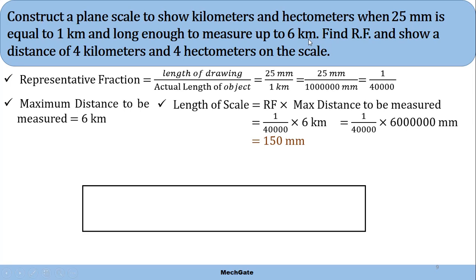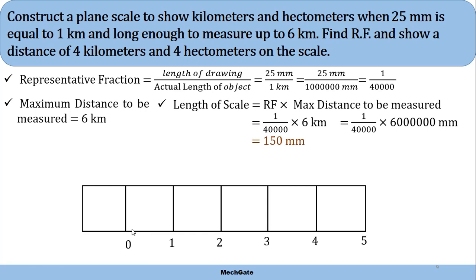We have to divide our 150 millimeter length into 6 equal parts. At the end of the first division, let's put 0. On the right-hand side of the 0, our larger unit is kilometers, and on the left-hand side our smaller unit is hectometers. The kilometers are labeled 1, 2, 3, 4, 5 since our maximum distance to be measured is 6 kilometers.